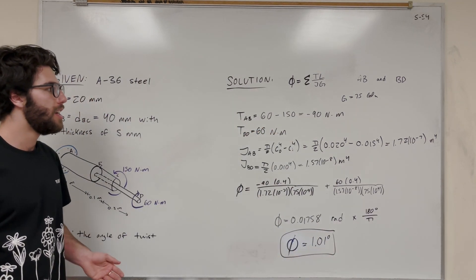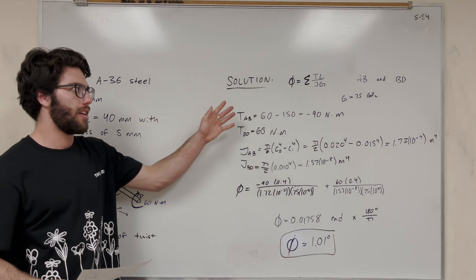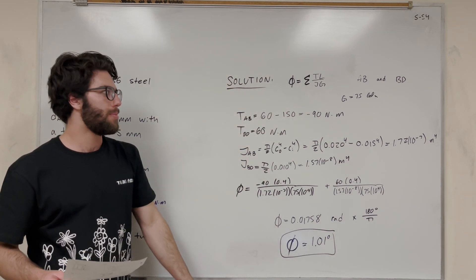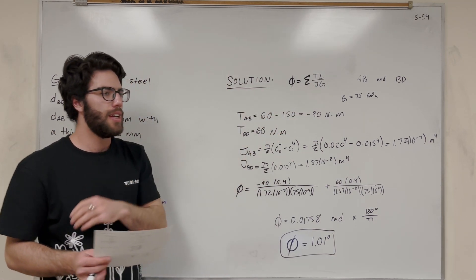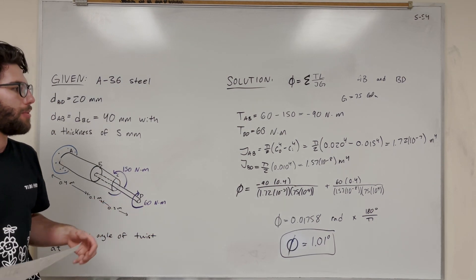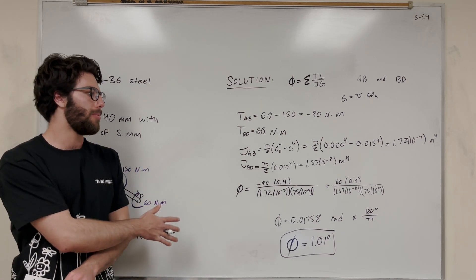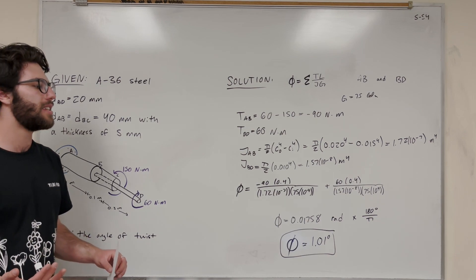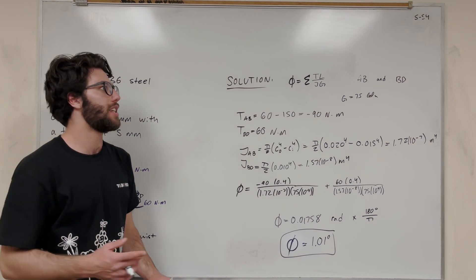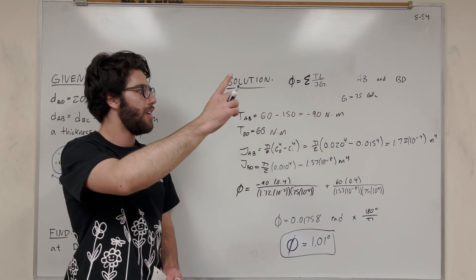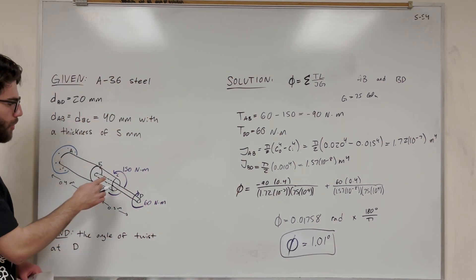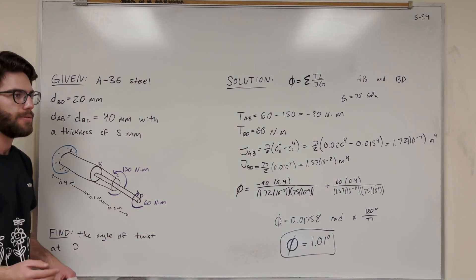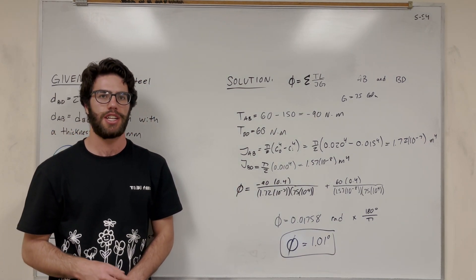So there we go. Cool problem, right? So it's really just about putting everything together. You just got to go through all the steps to figure out every part of this equation. And so if you're not getting the hang of it yet, feel free to check my playlist. I have a whole bunch of problems very similar to this one on angle of twist, on torque, how to find all of that. And yeah, stick around for the next video. I'm going to be solving 5.55, which we're going to find the angle of twist at point C this time. So it's going to be a little different. So thanks for watching. I'll see you in the next video. Peace.